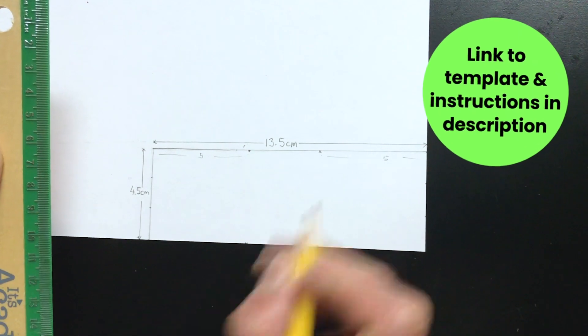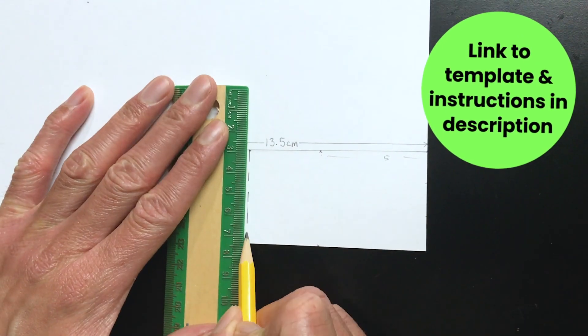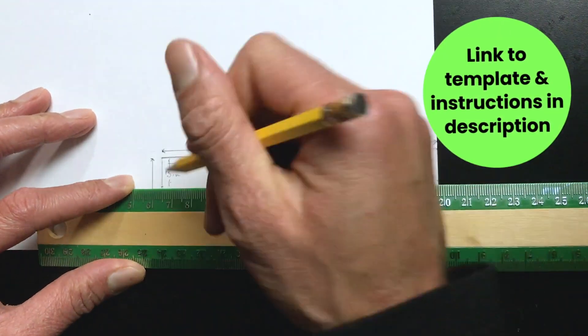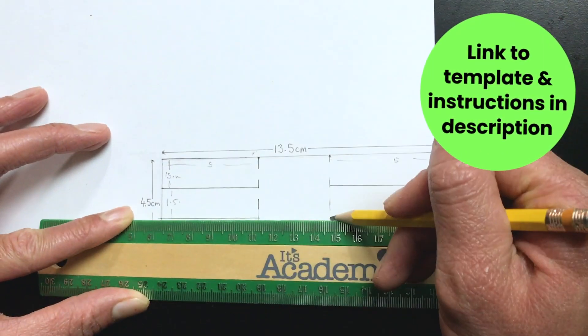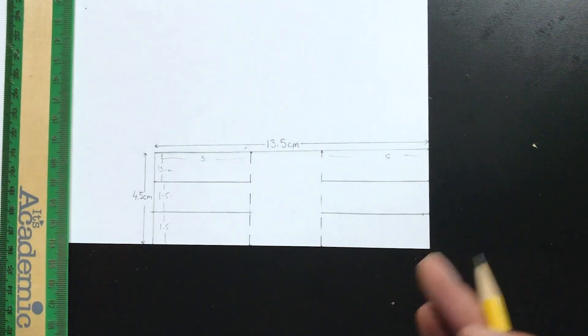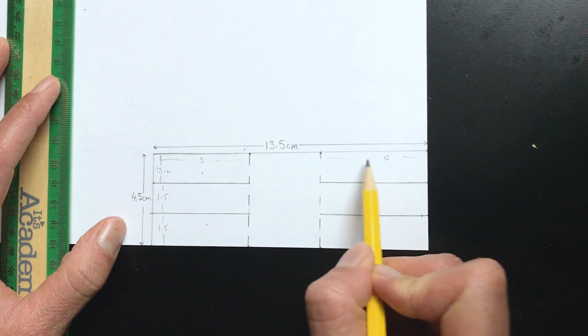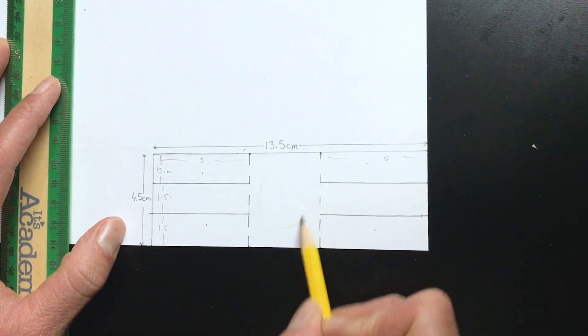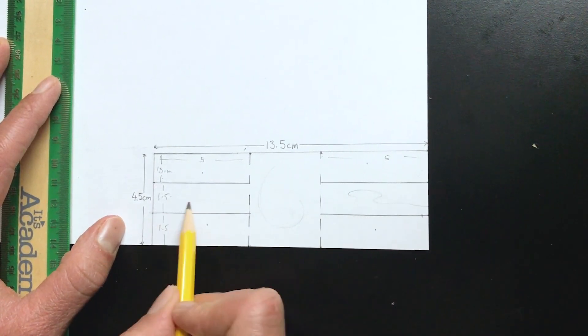We're going to draw the template first. Now we can see the shape of our dinosaur. These are going to be the legs, this will be the body, and here will be the head and the tail.